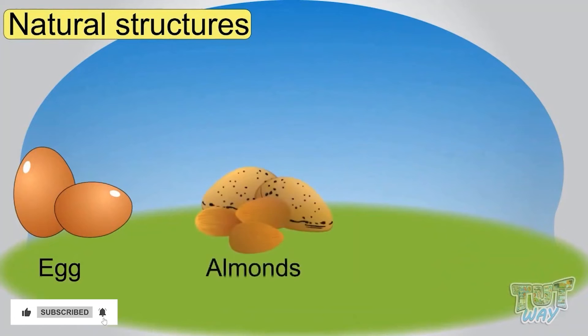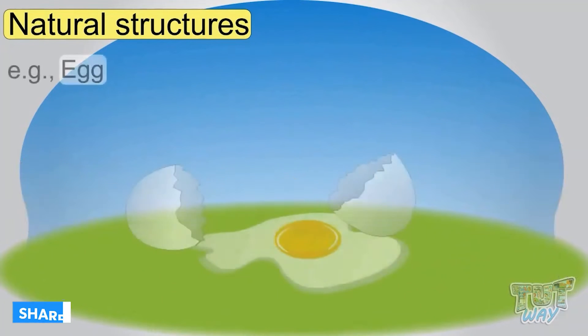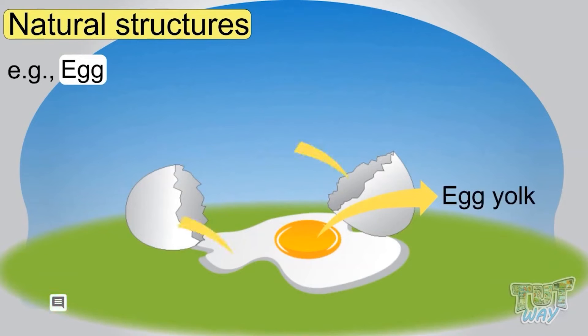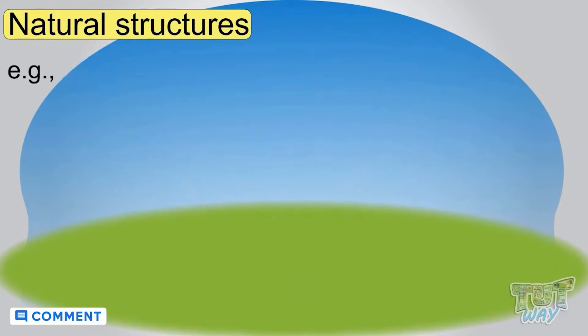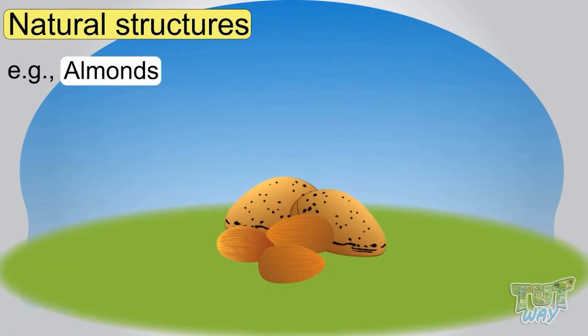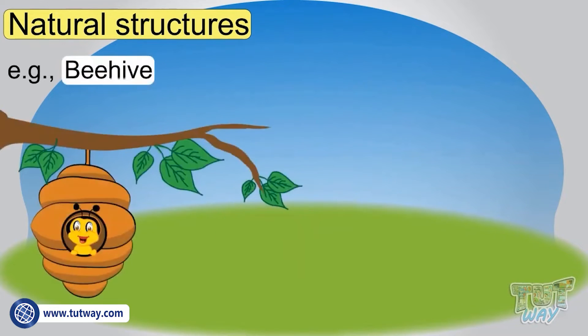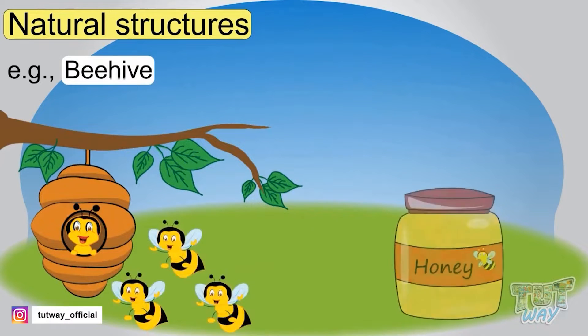Now here are common natural structures. Egg is a natural structure that has the egg yolk and albumin inside. Almonds is a natural structure we break to eat nuts. Beehive is a natural structure made by honey bees to store honey.